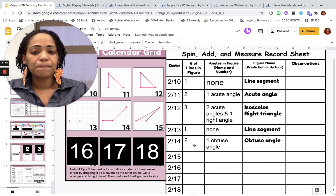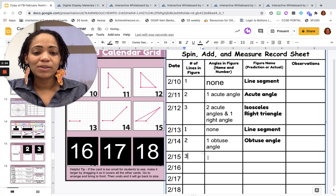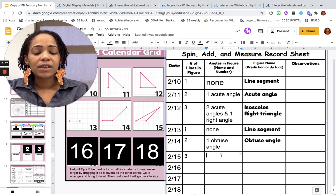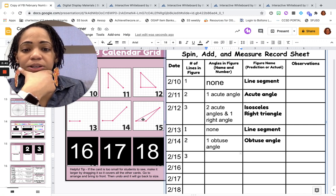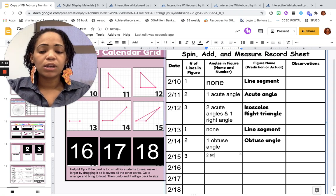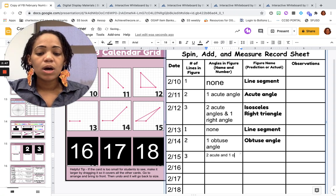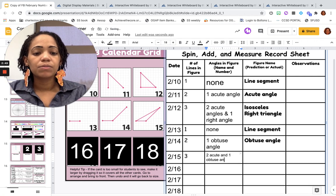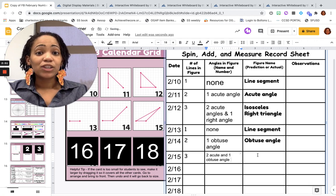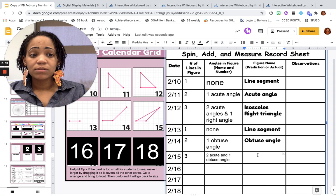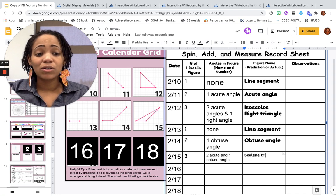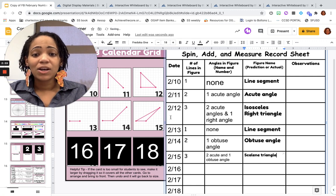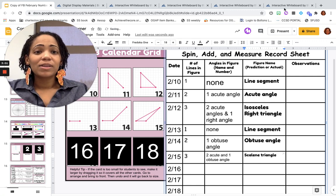Next we have the 15th, which is a triangle. So we have three line segments. We have how many acute angles? We know that this one is obtuse, so now we have two acute and one obtuse angle. Do y'all know what this type of triangle is called? It's called a scalene triangle because none of the sides are equal.